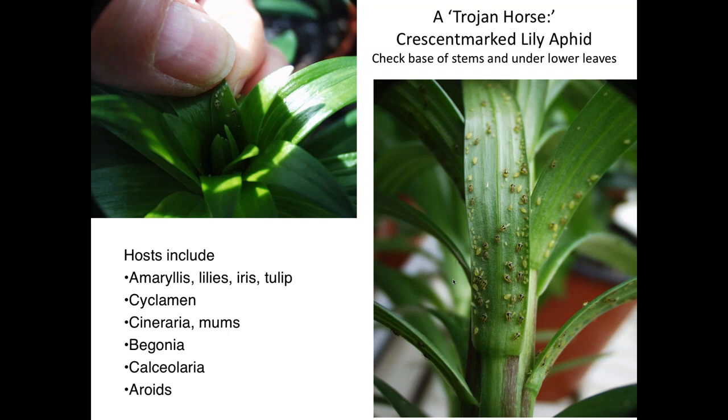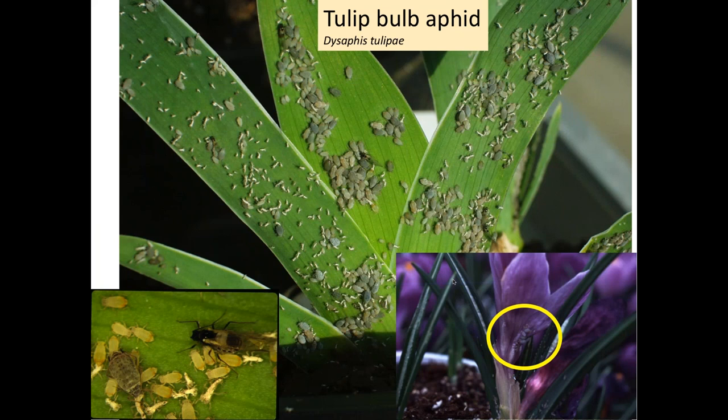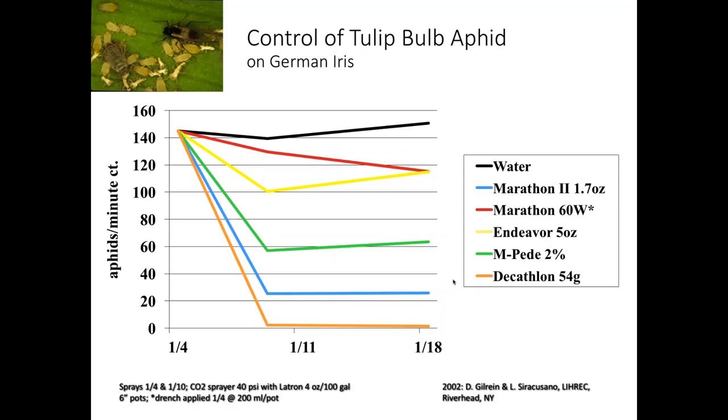Tulip bulb aphid — a grower was forcing German iris for early spring sales and saw really huge numbers of these aphids developing on the foliage fans. This presents a particular difficulty because you've got vertical and fairly waxy foliage which is very hard to treat successfully — it's hard to get materials to stick. We did a trial looking at control, and on the lower right you can see a crocus with tulip bulb aphids as well.